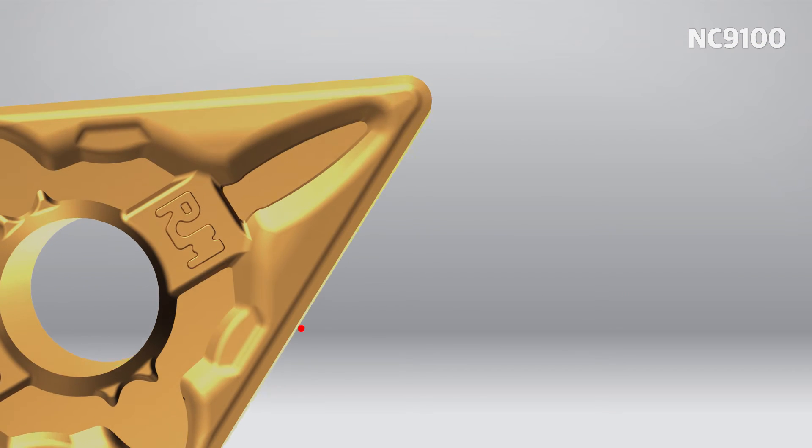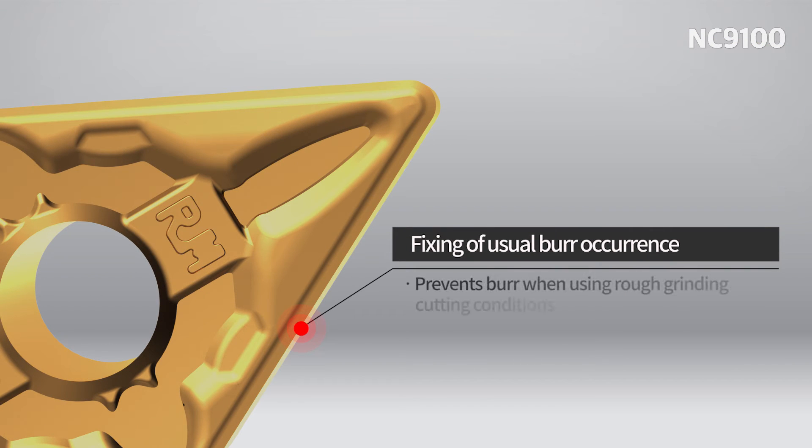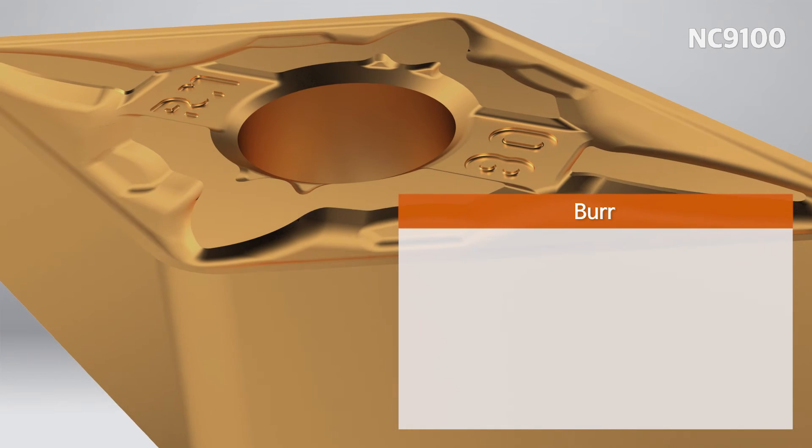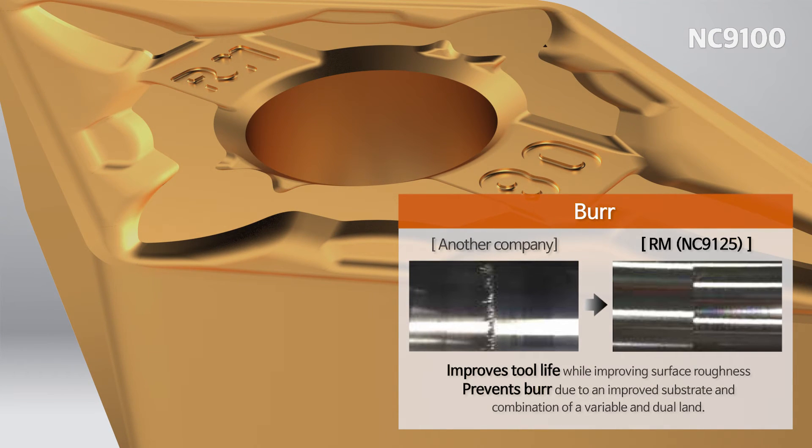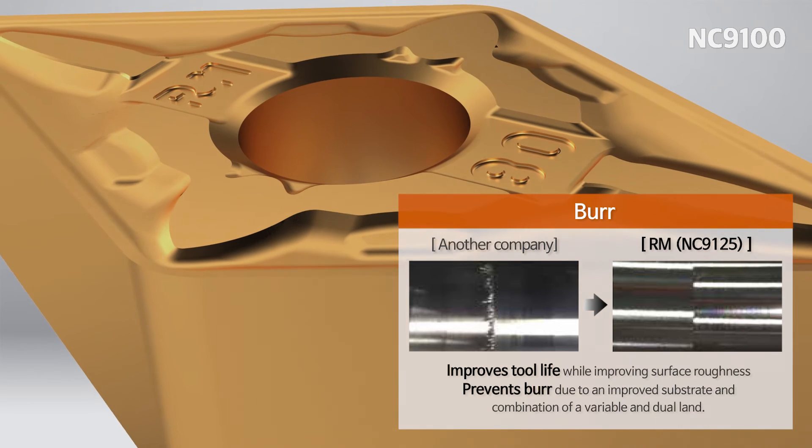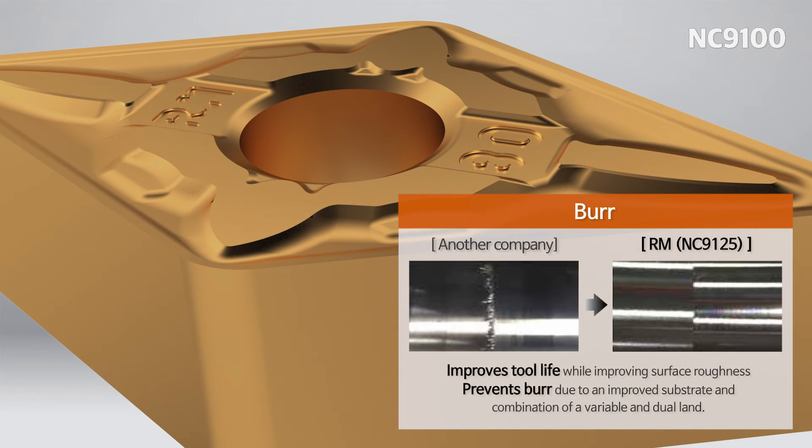The RM chip breaker is specialized for environments that create burrs during rough machining or edge wearing. This low cutting resistance chip breaker combines wide land and highly inclined angles to effectively discharge heat and disperse cutting load.